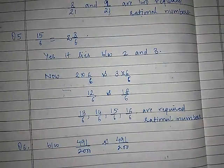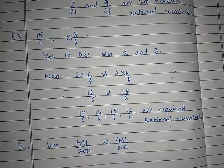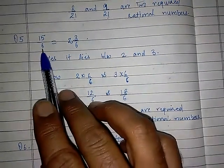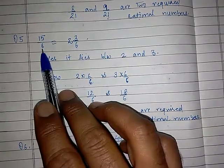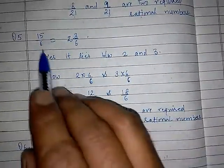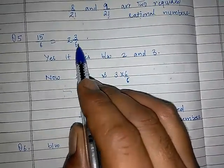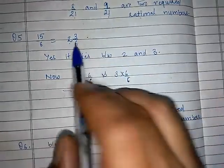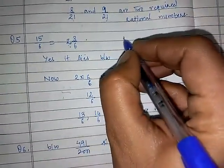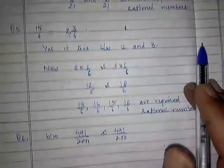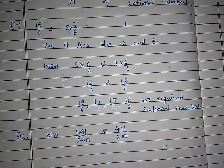Question: does 15 upon 6 lie between 2 and 3? First method: divide 15 by 6 and get the decimal. Or, convert to mixed fraction — 6 twos are 12, plus 3 gives 15 upon 6, so we convert the improper fraction: it is 2 and something. This means greater than 2, and since 3 is not there, it is less than 3. So yes, 15 upon 6 lies between 2 and 3.